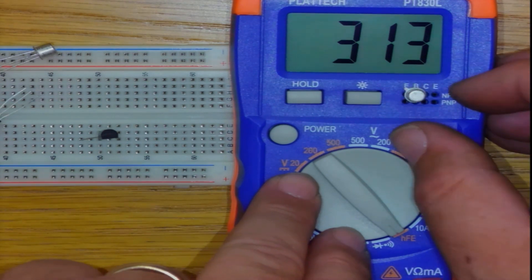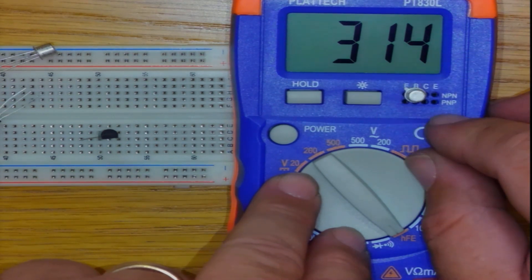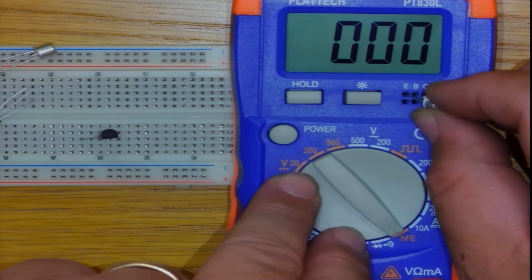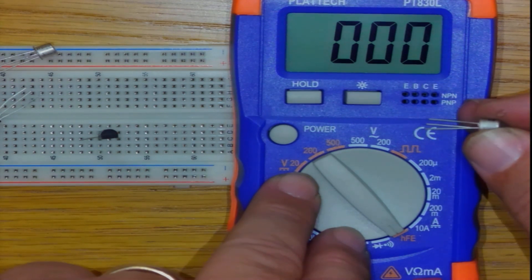And that, ladies and gentlemen, is how I measure beta DC and how I determine the leg arrangement of any transistor. Thank you.